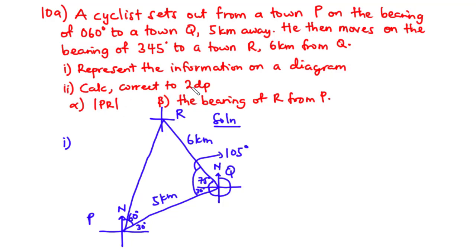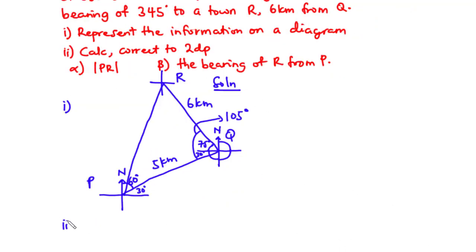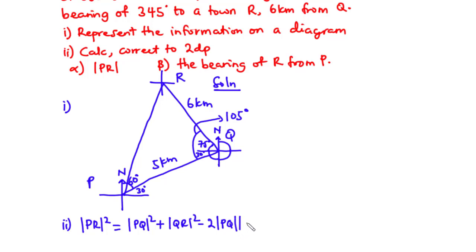For Part II, we are going to calculate correct to two decimal places. Alpha — the distance PR. Now to find the distance PR, we are going to use what we call the cosine rule. If this angle were 90 degrees, we would use the Pythagorean theorem, but since this angle is not 90 degrees, we use the cosine rule. According to the cosine rule: PR² = PQ² + QR² − 2·PQ·QR·cos(angle PQR), and that angle facing PR is 105 degrees.